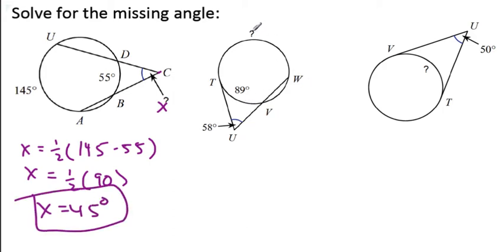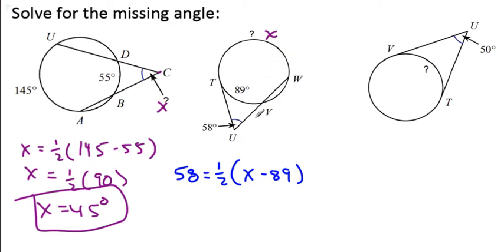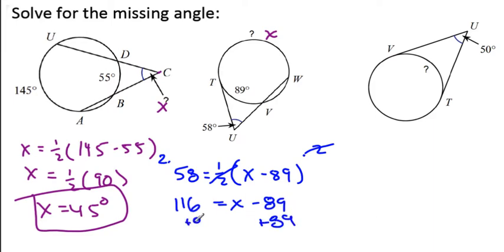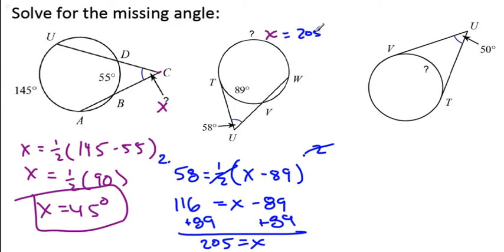Next example: we have a tangent and a secant line — same theorem, hard to screw up. The angle on the outside is 58, so 58 equals one half the difference. X is the larger arc, so it's one half of X minus 89. Multiply both sides by 2 to get rid of the half: 116 equals X minus 89. Add 89 to each side: 205 equals X. So the measure of this arc is 205 degrees.